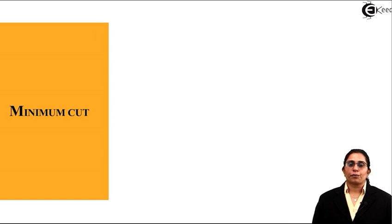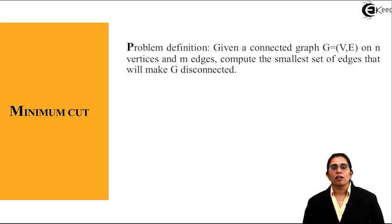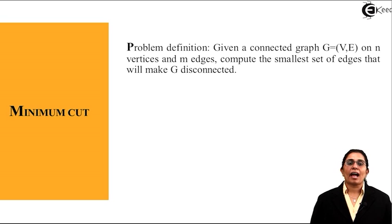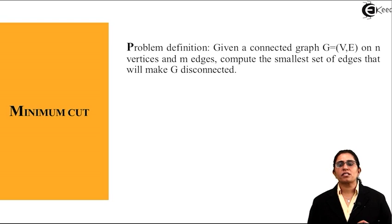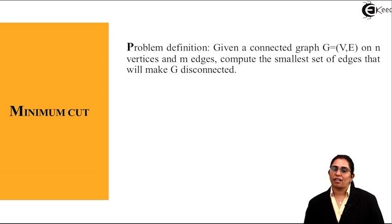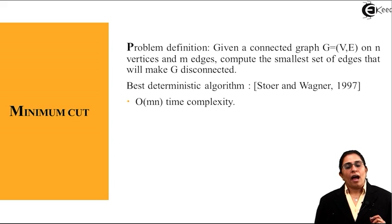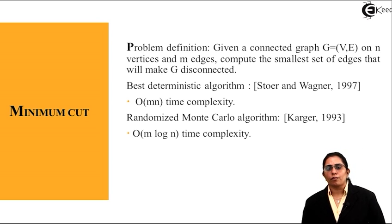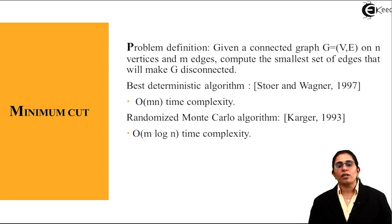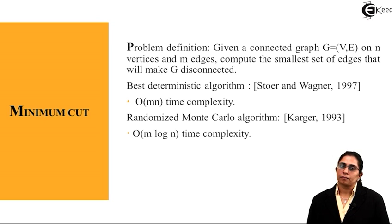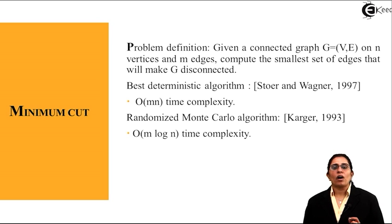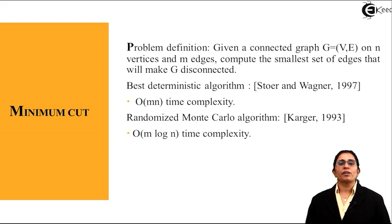What is minimum cut which is implemented using the randomized algorithm? Given a connected graph G with N vertices and M edges, compute the smallest set of edges that will make G disconnected. The best deterministic algorithm is Stoer and Wagner in 1997 which has time complexity of big O(MN). The randomized Monte Carlo algorithm by Karger 1993 has time complexity of big O(M log N), showing that randomized Monte Carlo algorithm performs better than the deterministic algorithm.